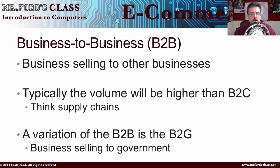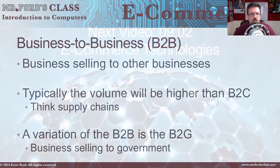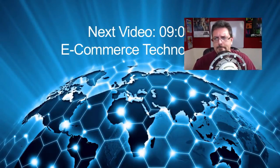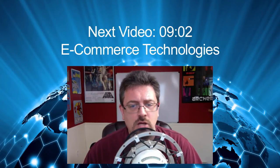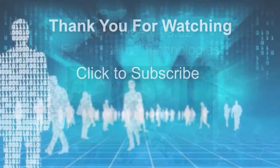A variation of B2B is something called business-to-government, or B2G, where the government is buying directly from a business. In our next video, we're going to take a look at e-commerce technologies — we'll talk about money and how e-commerce works as far as some of the back-end processes. So be sure to tune in for that.